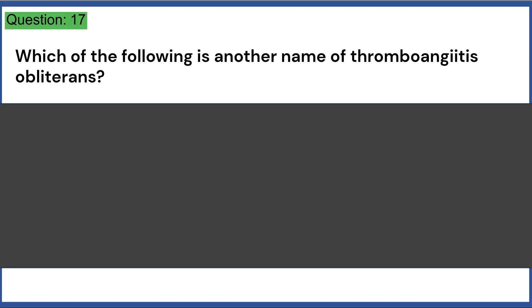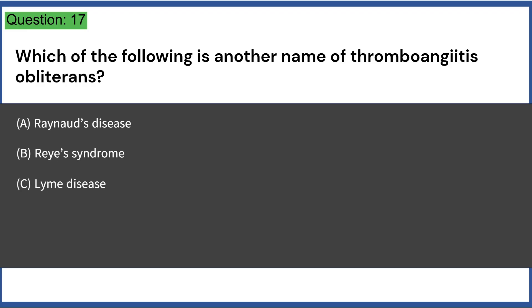Which of the following is another name for thromboangitis obliterans? A. Raynaud's disease, B. Reye's syndrome, C. Lyme disease, D. Buerger's disease, E. Phlebitis. Answer: D.